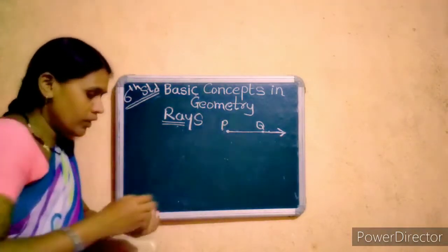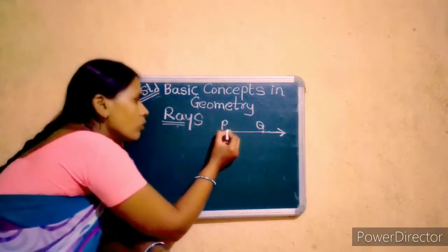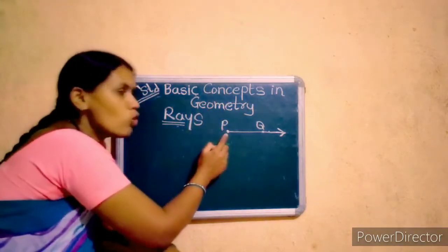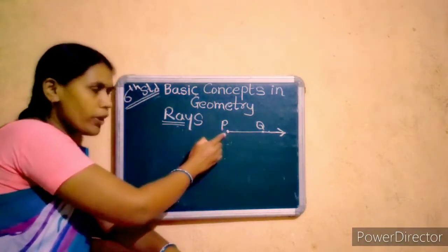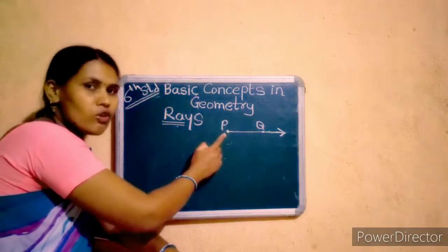This is the arrow head. And this point P, this point P is the origin of this ray.